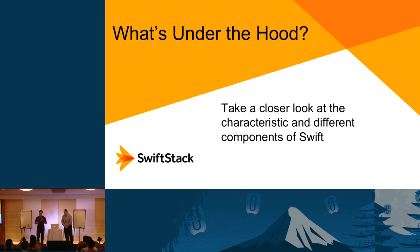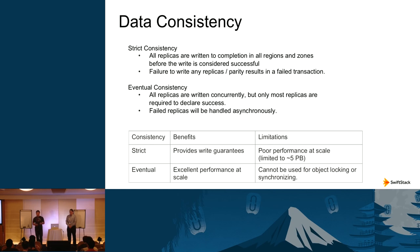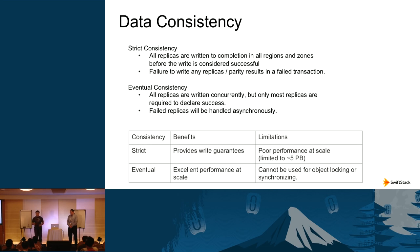Swift consists of four different pieces of service. First I want to talk about data consistency. Traditional storage systems are usually strictly consistent — when you write data to multiple locations, all of those locations must complete successfully for the write to be considered complete. If there's an error in one location, the entire write operation is considered failed. That's what block and file storage typically consist of.